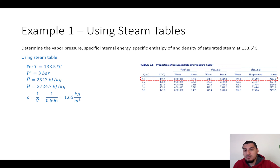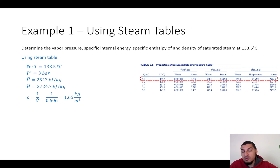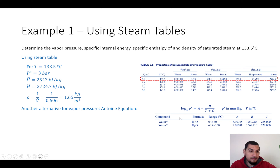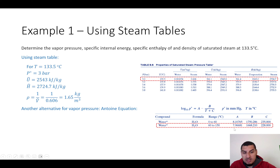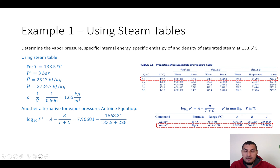There are a couple more options for finding the saturation pressure. One is applying Antoine's equation — we know the temperature and can look up the Antoine constants. Water appears twice in the table: one entry for 0 to 60°C and one for 60 to 150°C. We use the second range since our temperature falls within it. Substituting into the equation gives a saturation pressure of 2.999 bar, essentially 3 bars — the same result.